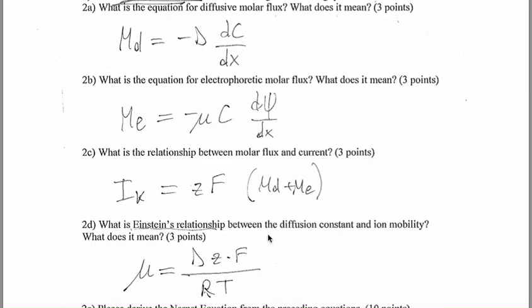What is the Einstein relationship between the diffusion constant and ion mobility and what does it mean? So, the mobility mu and the diffusion constant are related by basically the gas constant, RT, the gas constant and the temperature. So, the higher the temperature, the less the mobility, for example. The higher the diffusion constant, the higher the mobility.